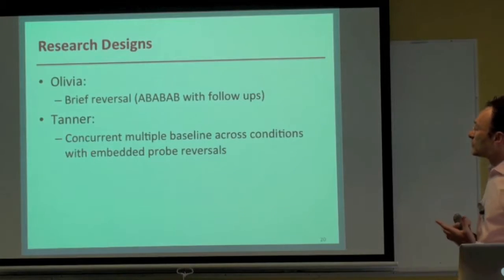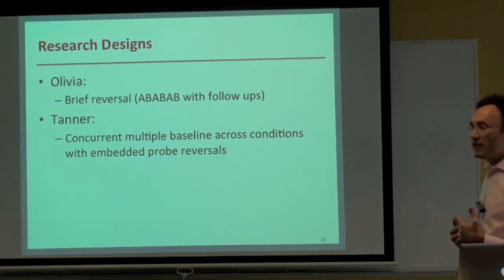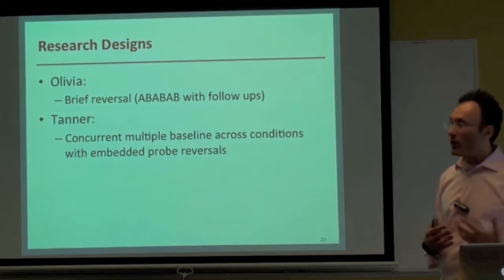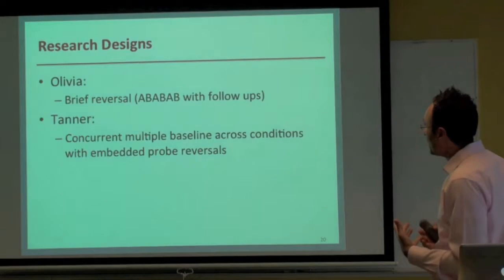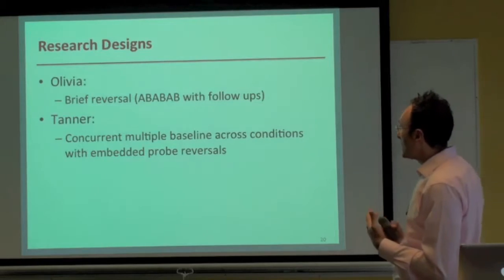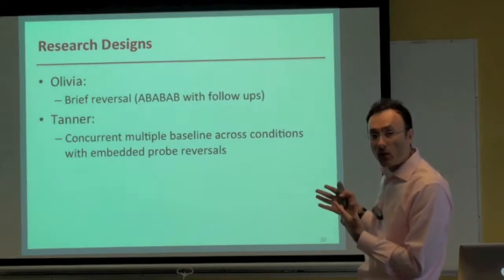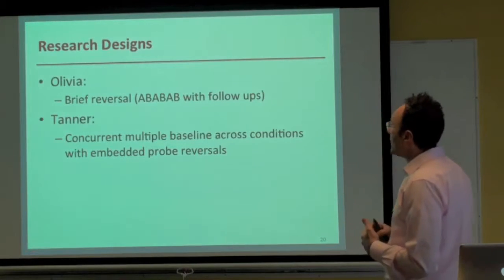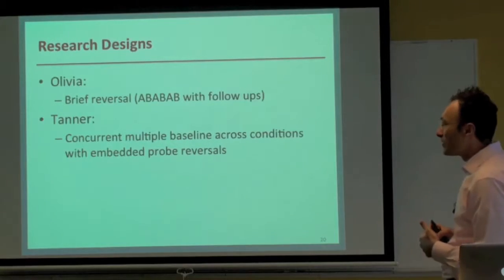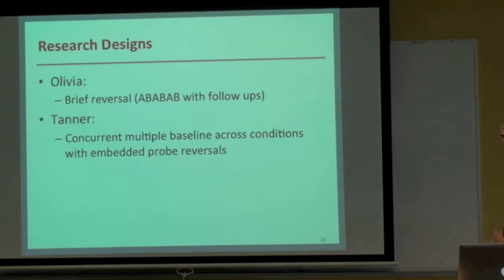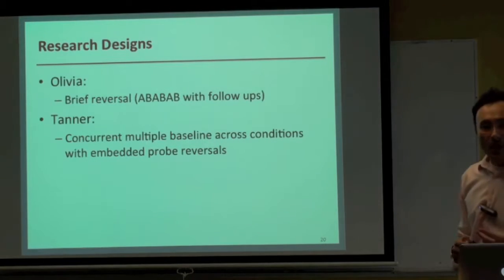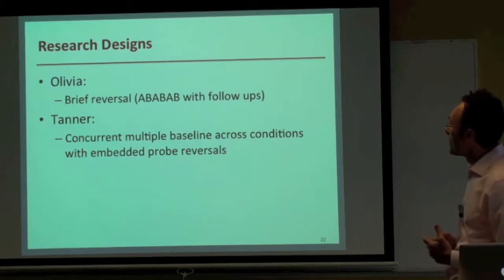For research designs: for Olivia, we used a brief reversal — specifically an AB, AB, AB with follow-up design. For Tanner, we used a concurrent multiple baselines across conditions with embedded baseline probes.